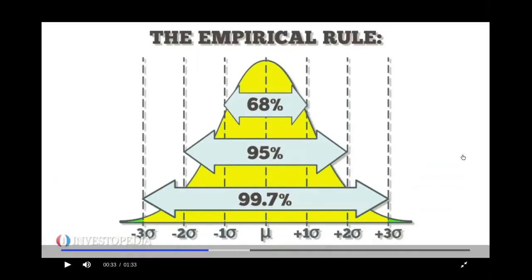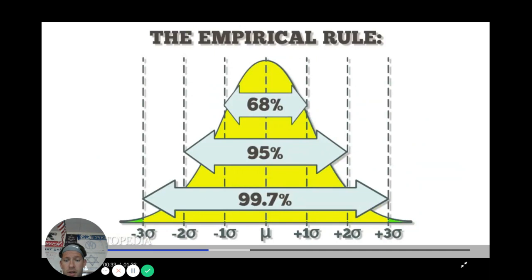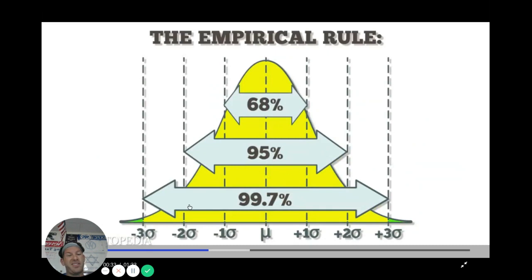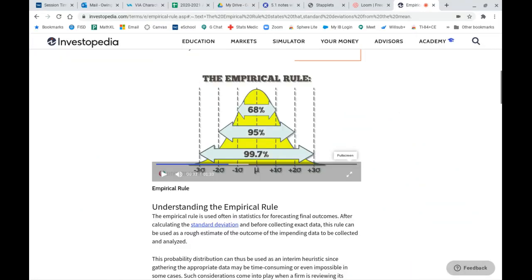The empirical rule tells us that between negative 1 and positive 1 standard deviations, 68% of our data lies there. Between negative 2 and positive 2 standard deviations, 95% of our data falls there. And 99.7% of our data falls between negative 3 and 3 standard deviations of the mean.